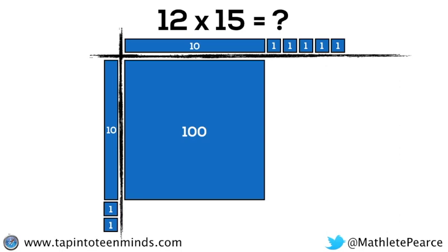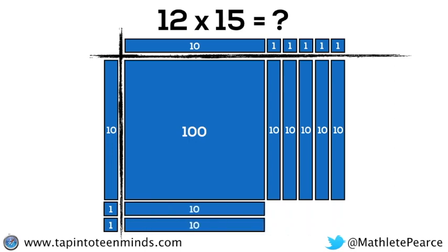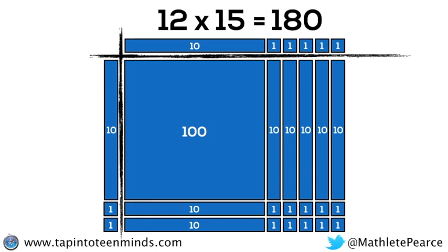So 10 times 10 gives us 100 or 100 flat. 10 times 5 is going to give us 5 10 rods or 50. And we've now got 2 times 10 for 2 10 rods or 20, and 2 times 5 for 10. And if we add up all of those partial products, we end up with a total product of 180.